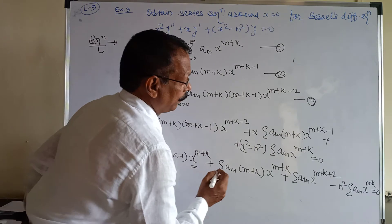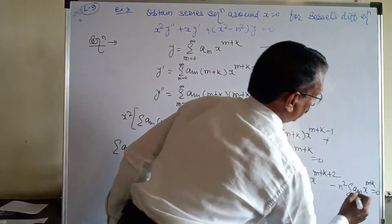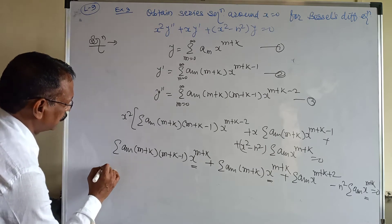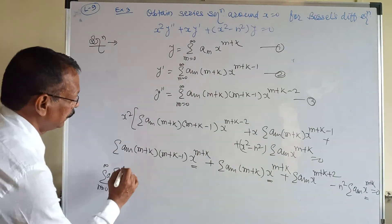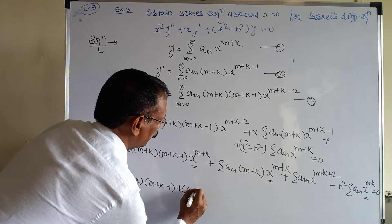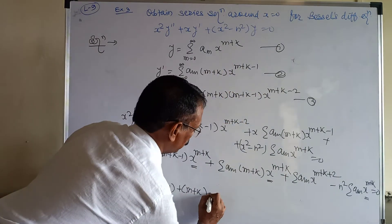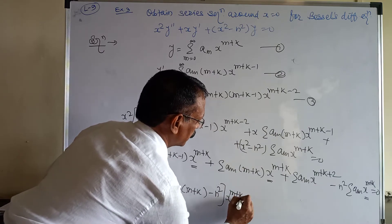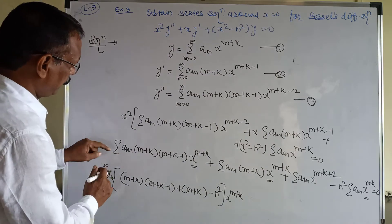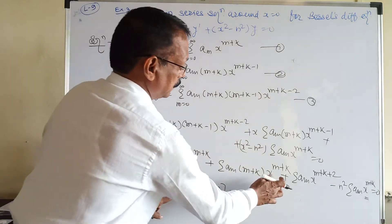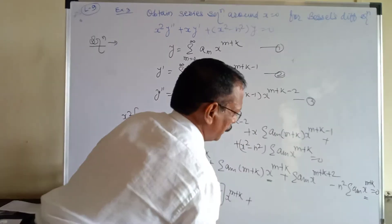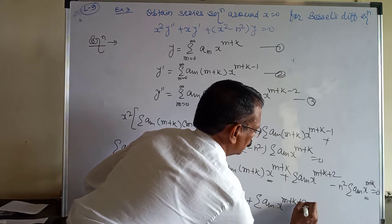Combining equal powers of x — the x^(m+k) terms group together. The bracket becomes aₘ [(m+k)(m+k−1) + (m+k) − n²] x^(m+k), plus the remaining term Σ aₘ x^(m+k+2) = 0.